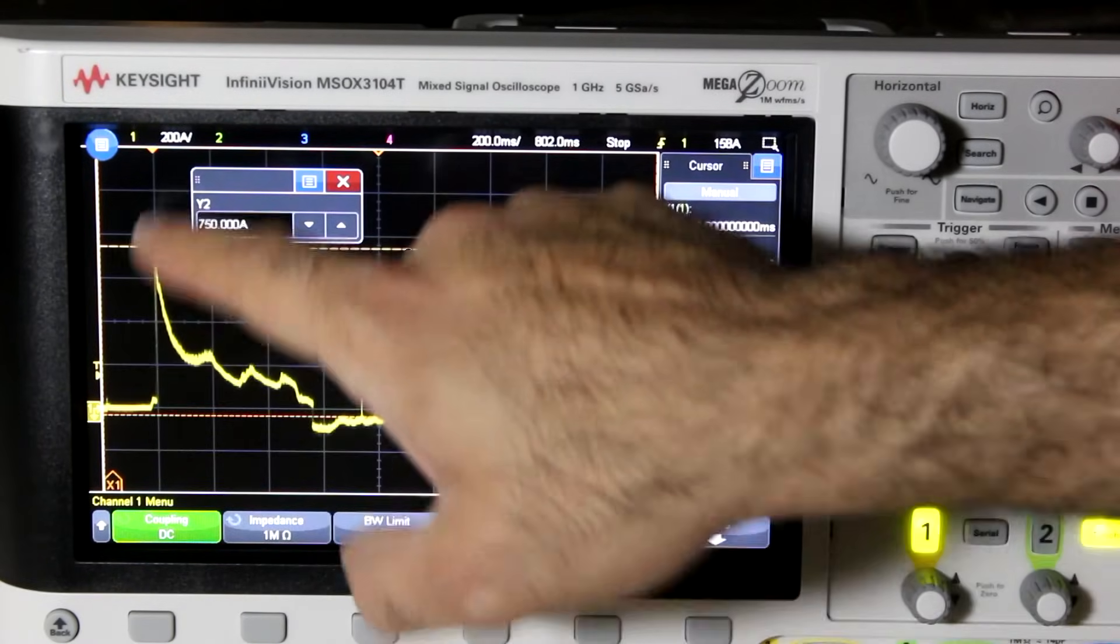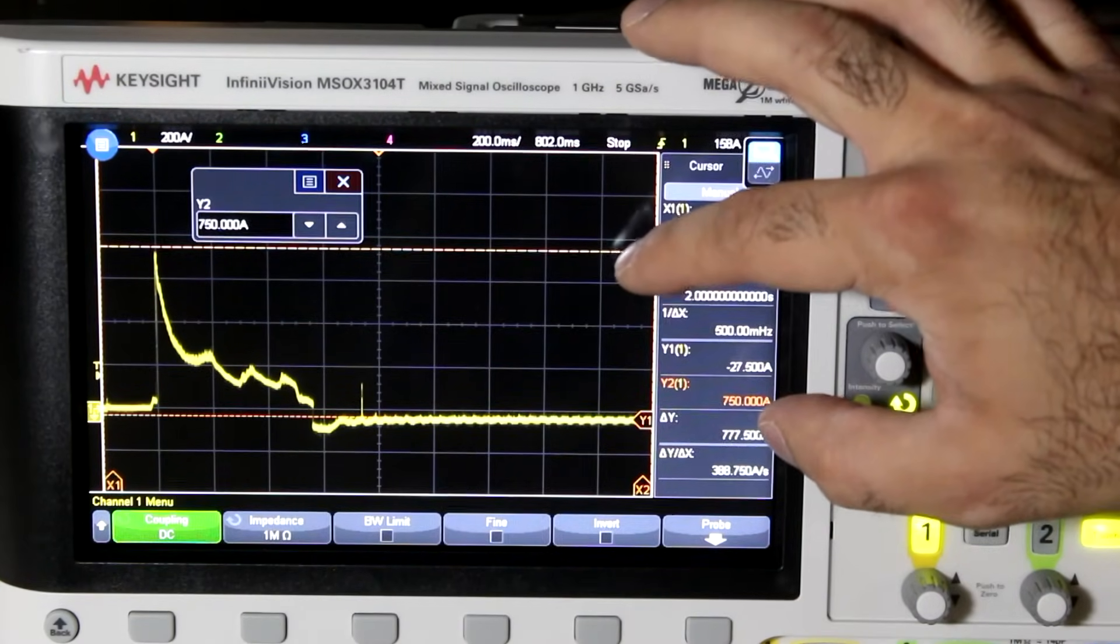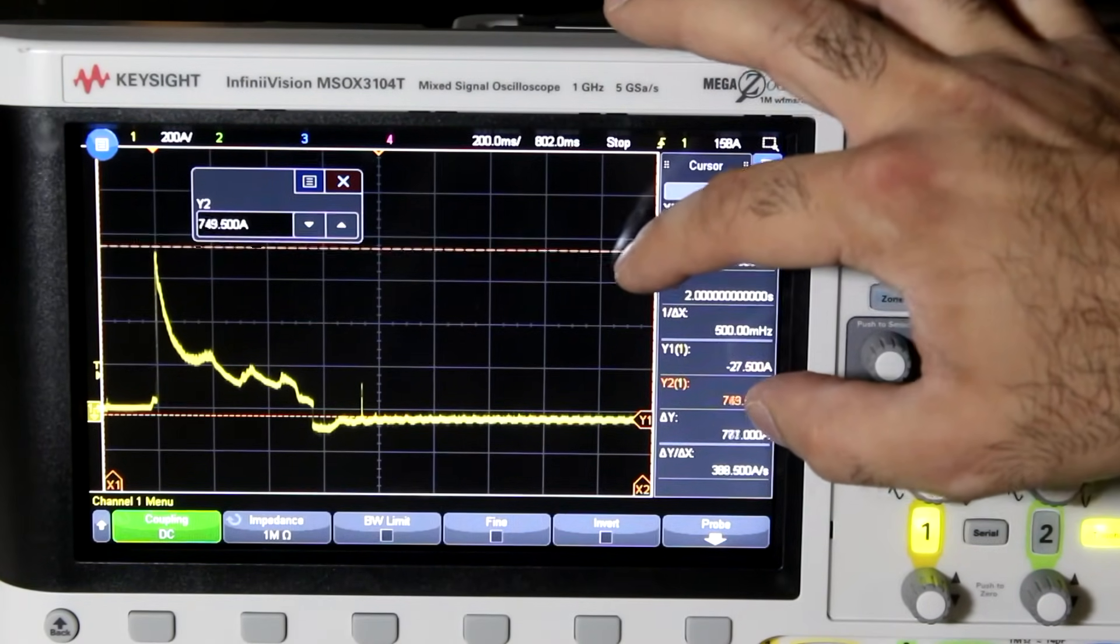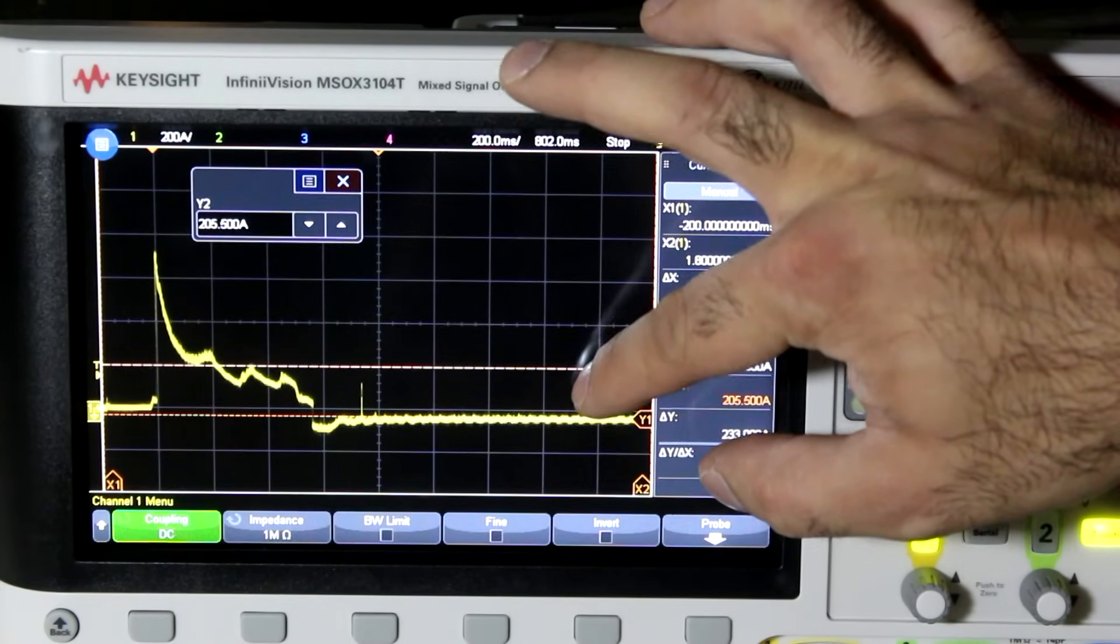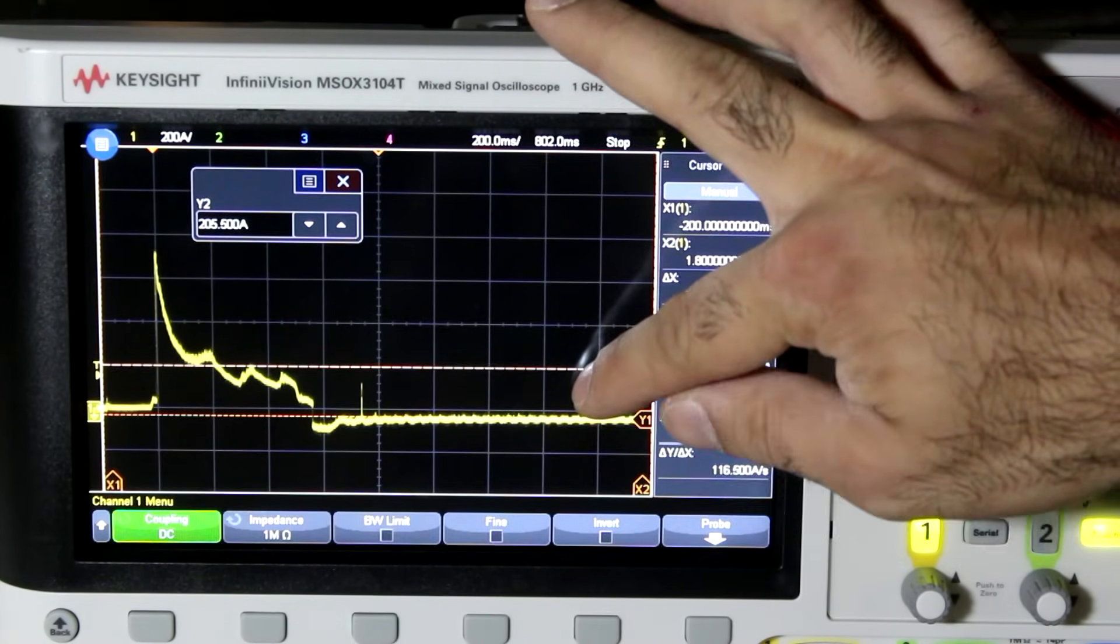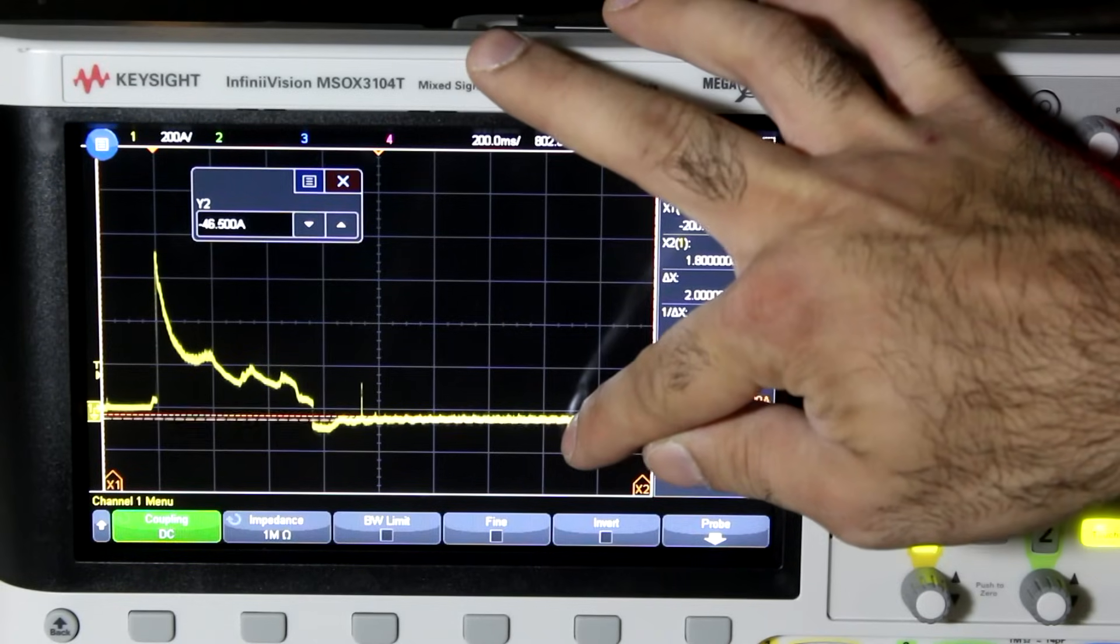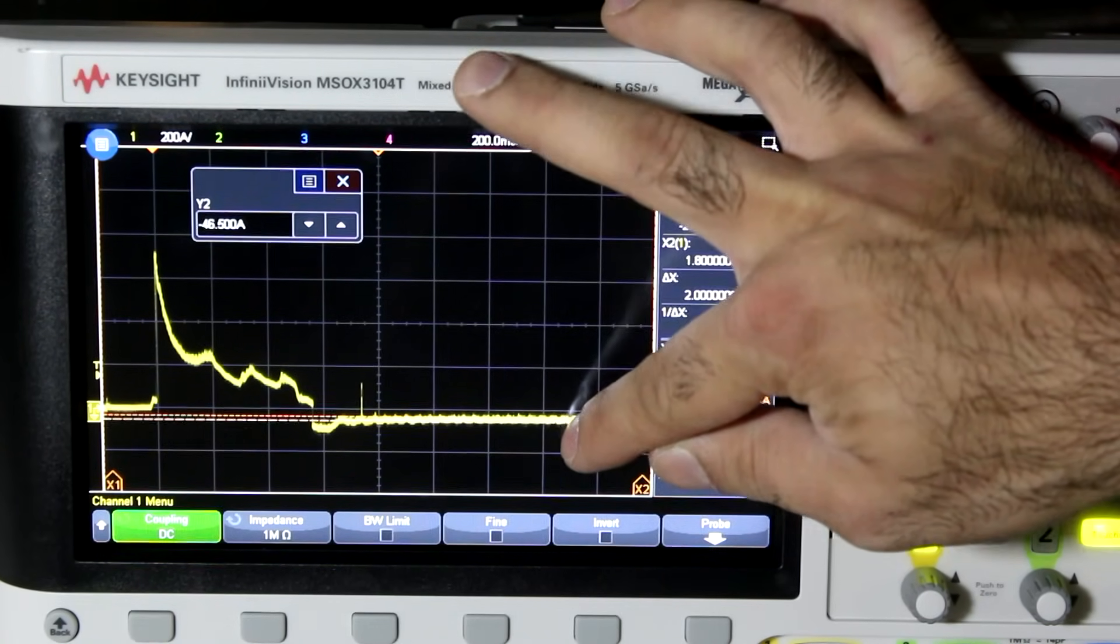You can see here that the inrush current into the crank motor is around 750A and quickly drops to around 200A while you're cranking the car. When the car starts, it charges the battery here so that the current goes to negative 30A to 40A.